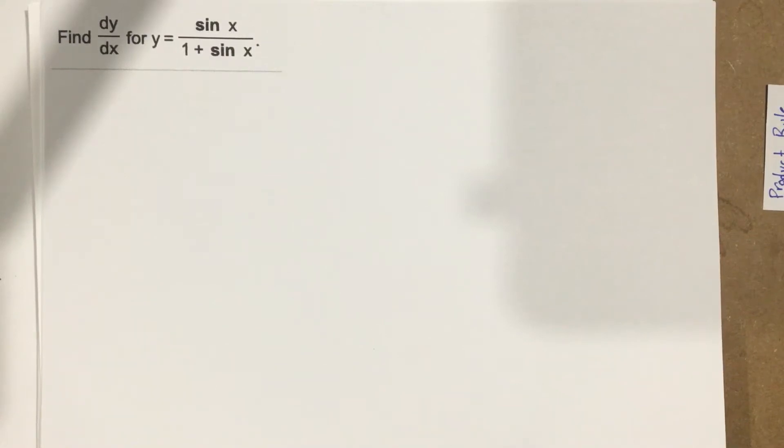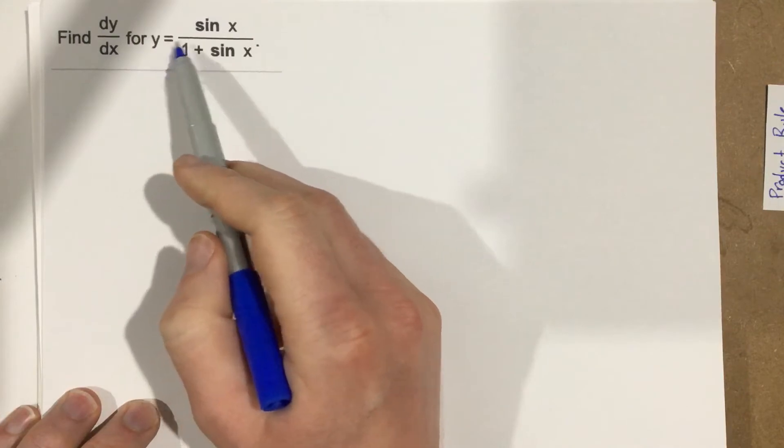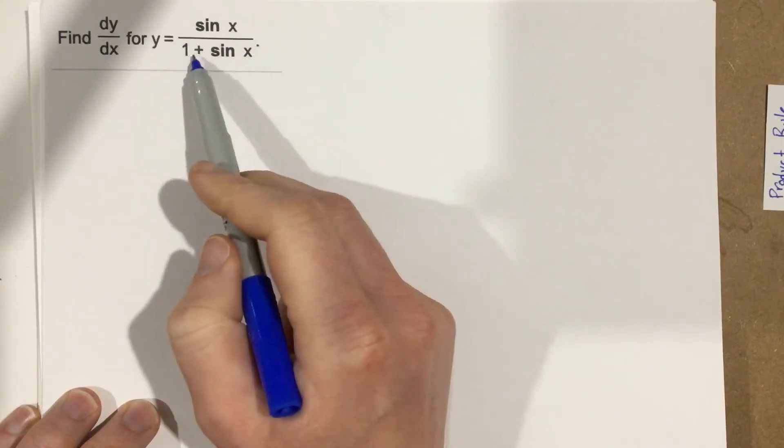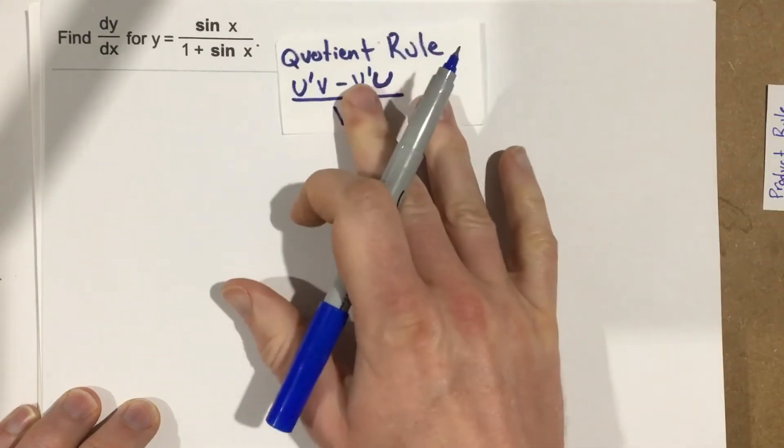This is problem number 5 from section 3.5, and this problem says find dy over dx for y equals sine x over 1 plus sine x. So you can see we have a division there, so we're going to end up having to use the quotient rule in this problem.